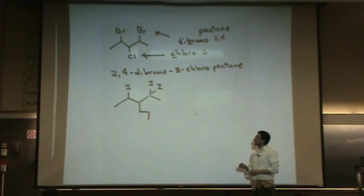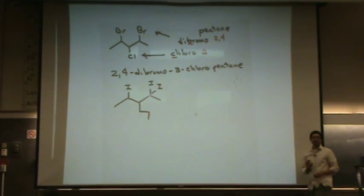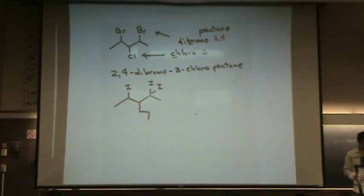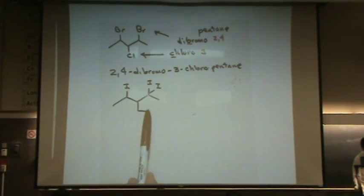In this case, the longest possible chain you see is one, two, three, four, five, six. Do you see that? However, when there is a functional group on your carbon structure, in this case the halogen, it must be contained in the longest chain.